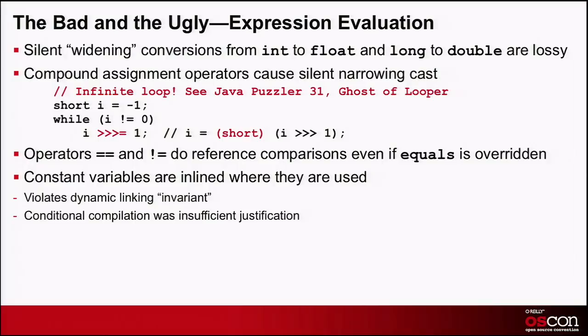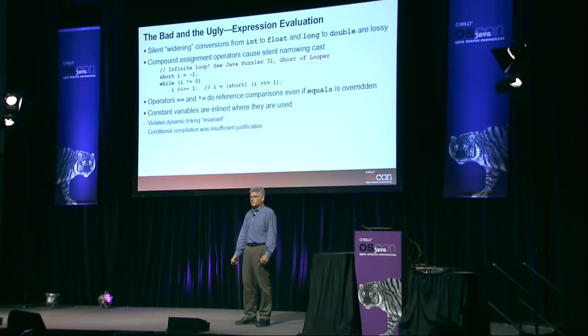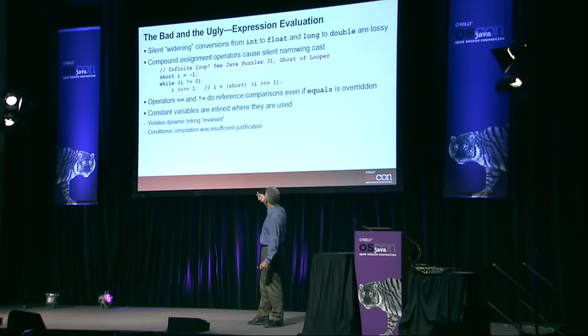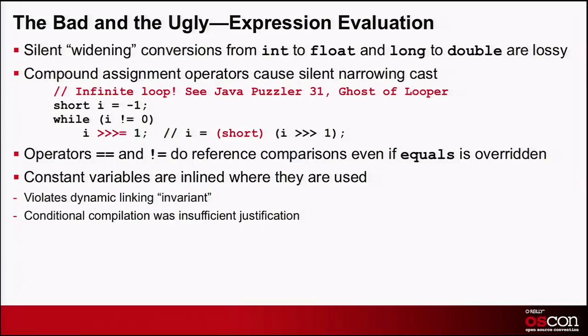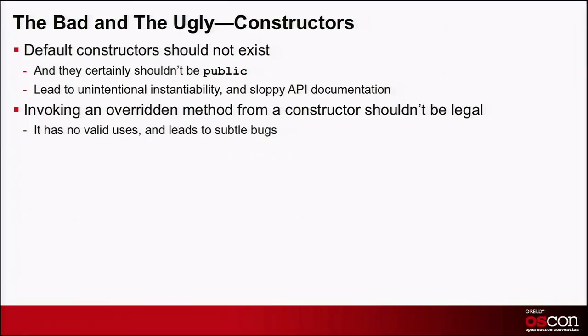The operators double-equals and not-equals are reference operators — they should be value operators, calling equals if defined. It was a mistake to take the nice syntax and waste it on something you rarely want to do, and it's a cause of frequent bugs for beginners who compare strings using double-equals and then don't know why it doesn't work. Also, if you have a public static final field in a library, that field is actually copied into the client — if you forget to recompile the client, you don't get the new value.